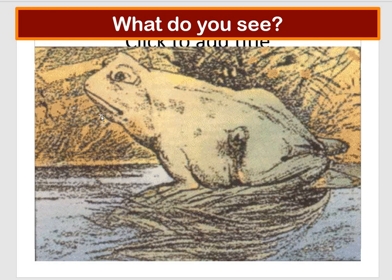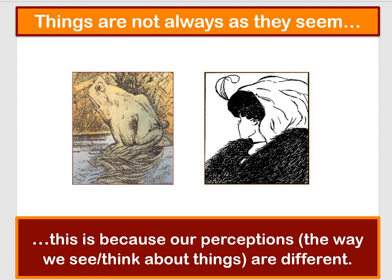If you can only see one of them, maybe grab somebody else in your house and see if they can point out the other. Different people see different things, and in class this always leads to a big discussion about why — maybe it's to do with animals you like, a pet you have, a book you're reading, or a TV show. Things are not always as they seem because of our perceptions — the way we see and think about things are different.